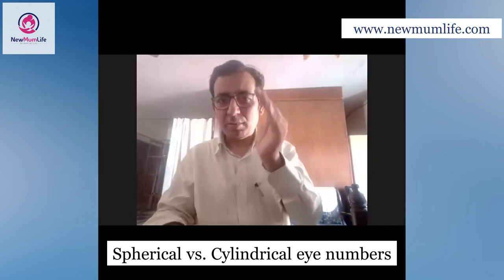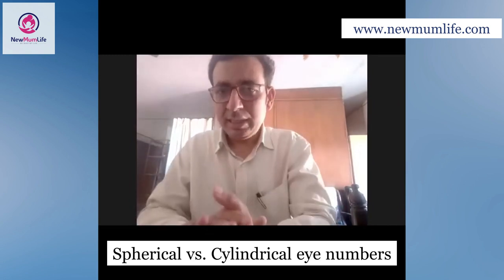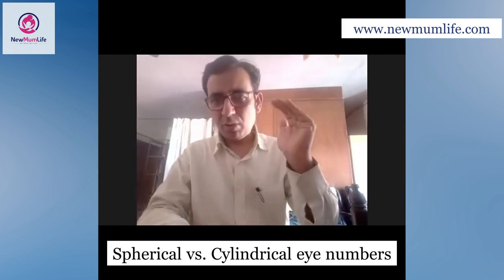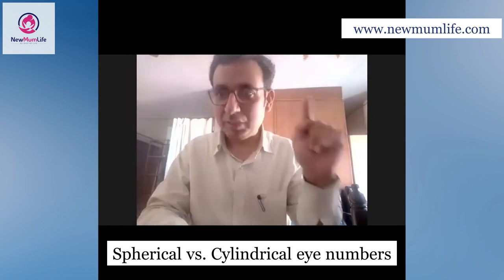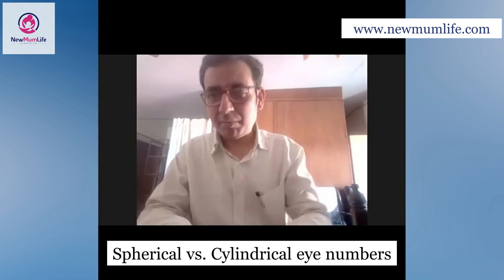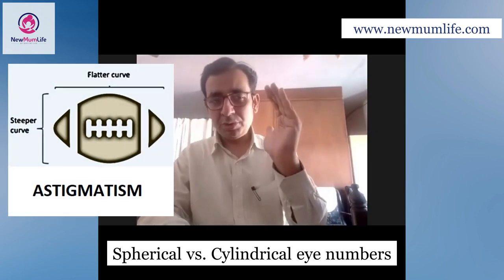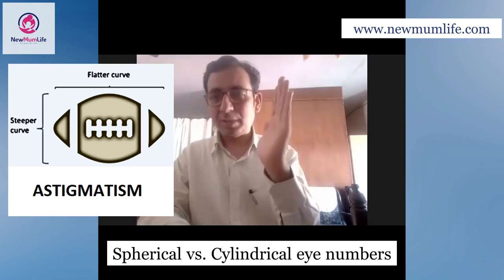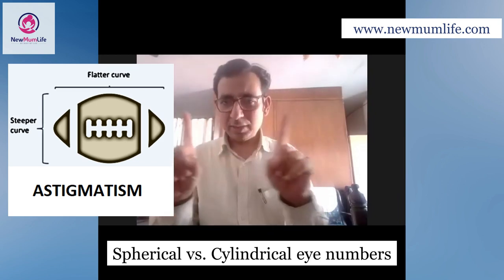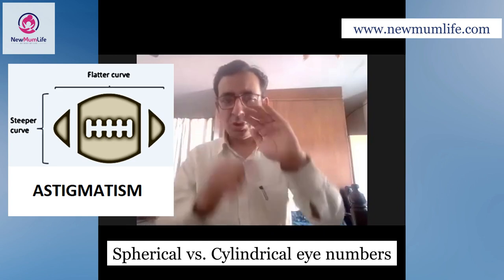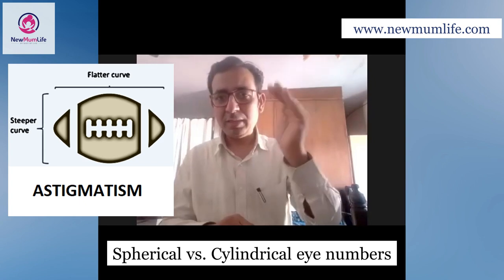If the cornea is steep vertically, it is more curved in that direction. We call it steep and flat cornea in our language. In a particular angle, it is more or less than flat. If the cornea is steeper, the cylindrical number is minus; if the cornea is flatter, the cylindrical number is plus. These different values of curvature give us the cylindrical numbers based on the shape of the cornea.